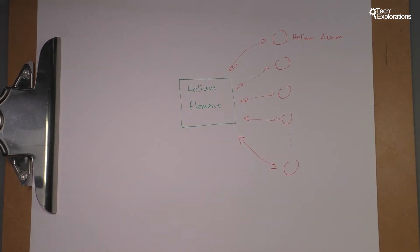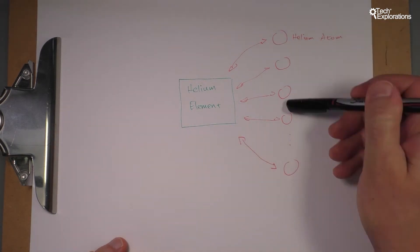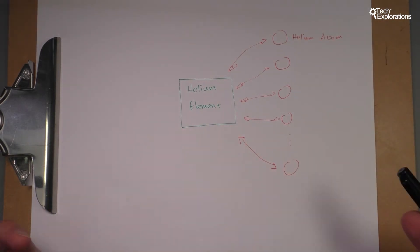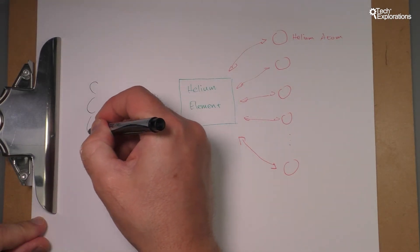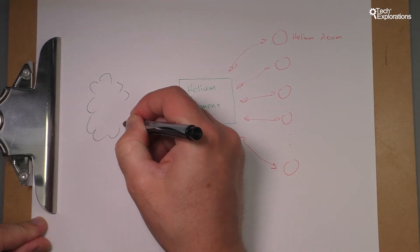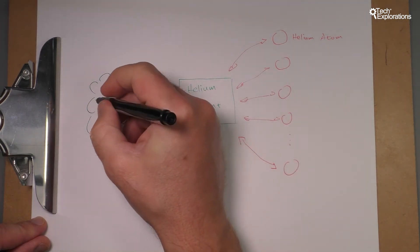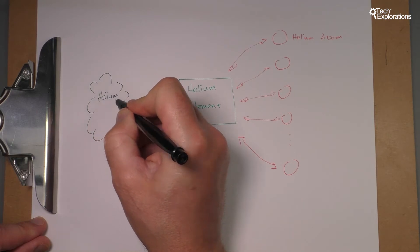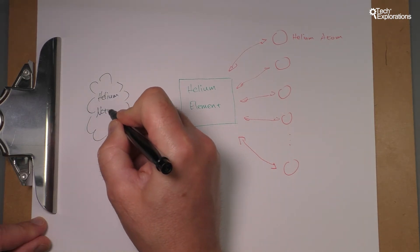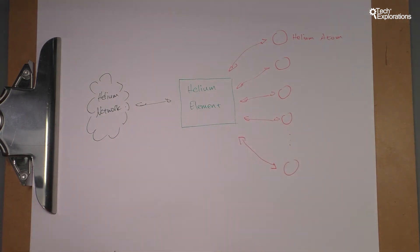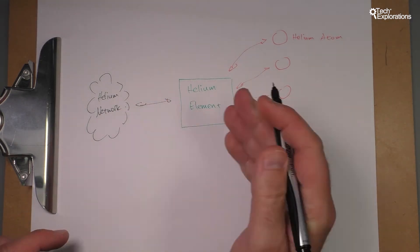Once the element gets those data sends, a sensor data sent by the atom, then it will relay it onto the Helium network. I'll use black for that. So here's a little cloud and this is the Helium network. And the Helium network is where the data eventually will aggregate from as many elements as you may have.